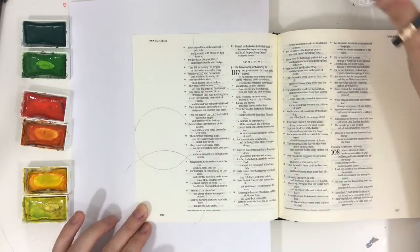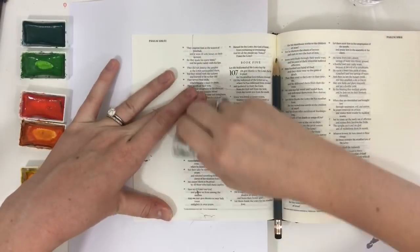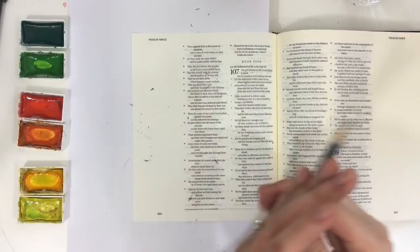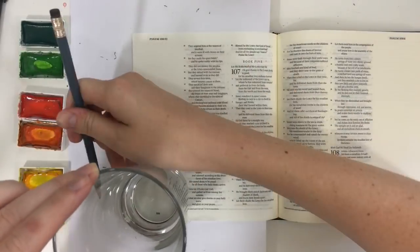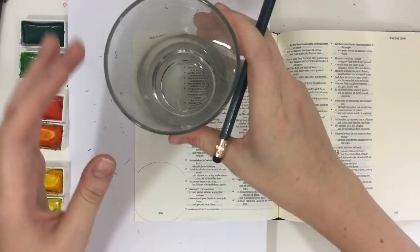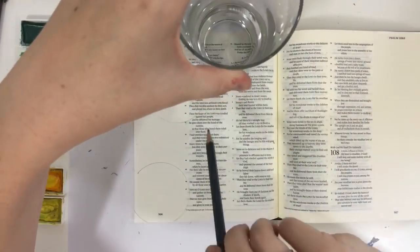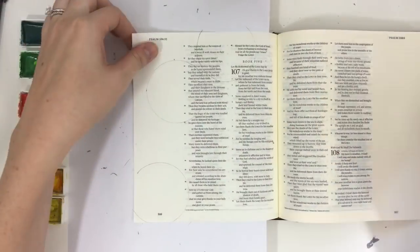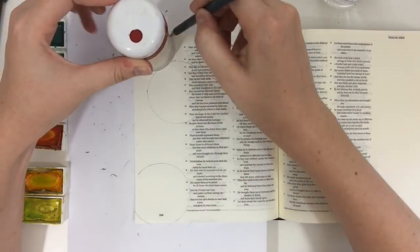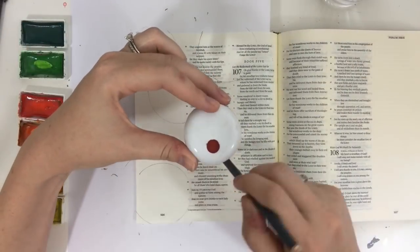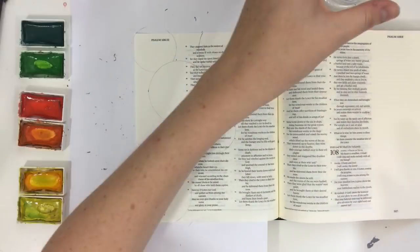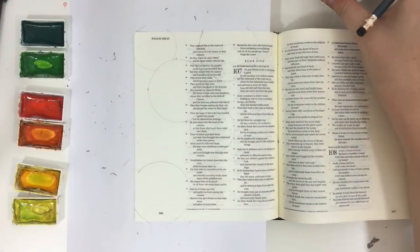I wanted to do something that was summery and the verse I'm working on talks about thirst, so I was thinking lemonade and thought I would do some citrus slices on my page here. So I'm just taking a variety of circle shaped objects to draw some circles on my page.